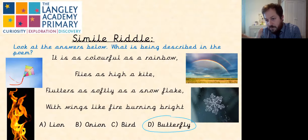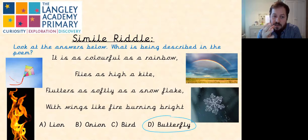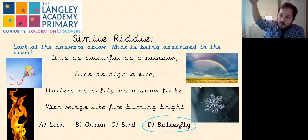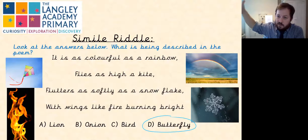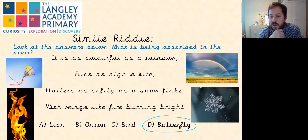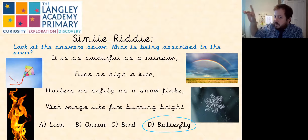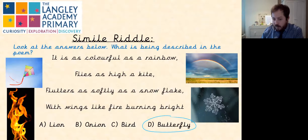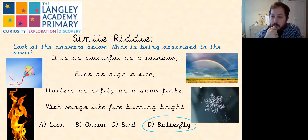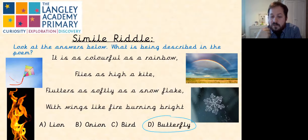So it is as colourful as a rainbow — we had a rainbow with multiple colours. It flies as high as a kite — you get that idea of how a kite flies in the air. Flutters softly like a snowflake, that flows through the air gently falling to the ground. With wings like fire burning bright — this is to do with the brightness of the colours on its wings. When we think back through it now, butterfly makes sense.